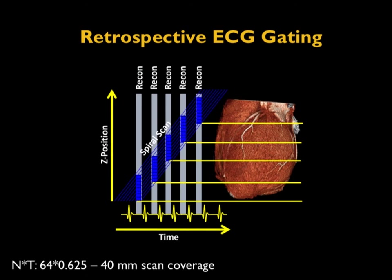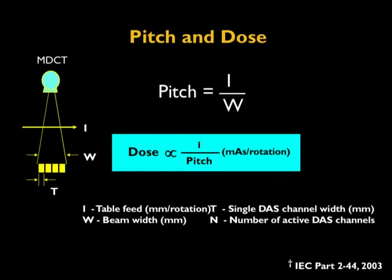On a 64-slice CT scanner, the maximum volume coverage is only 40 millimeters. To cover the heart, multiple heartbeats are needed, with overlapping areas to avoid data gaps. In retrospective ECG gating, the X-rays are turned on throughout the heart cycle until the heart is fully covered, and then only part of the data is used for reconstruction. The pitch is also an important parameter; radiation dose is inversely proportional to pitch, defined as table feed per gantry rotation divided by total beam width.